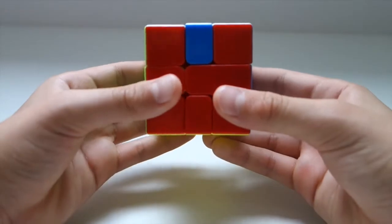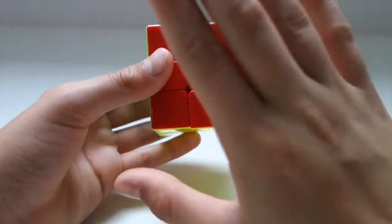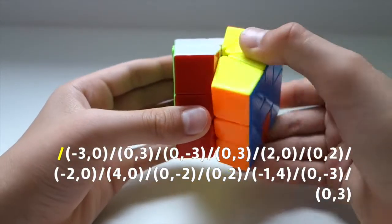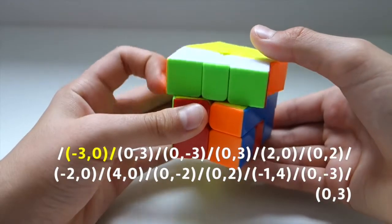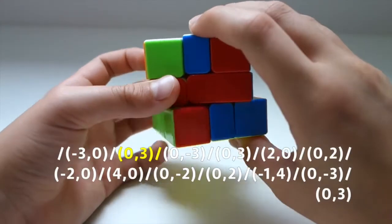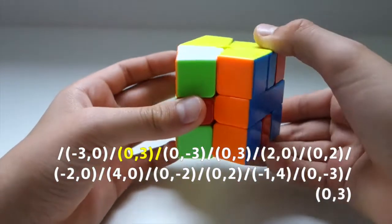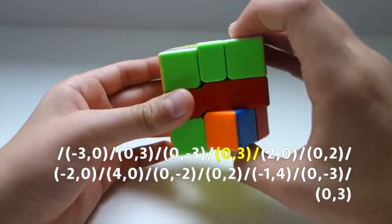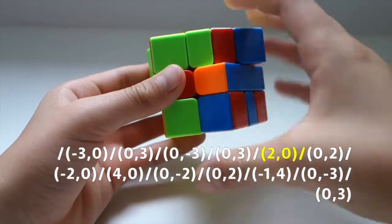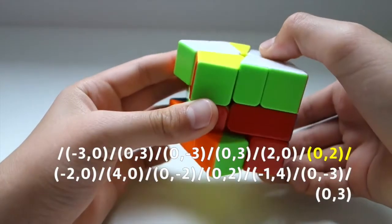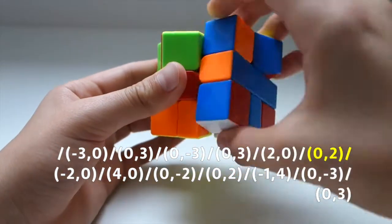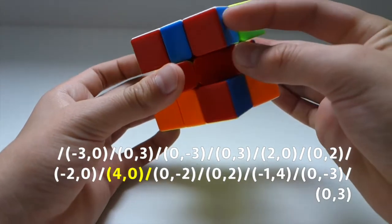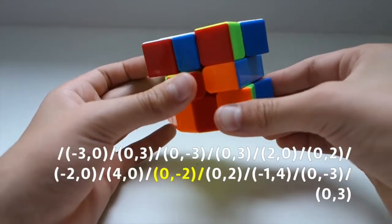The way you hold it is so that you have the two unsolved edges in the front and on the right face. The algorithm is as follows.